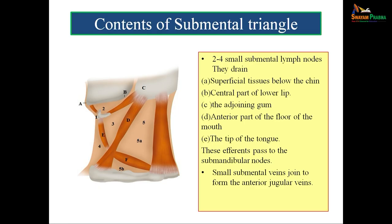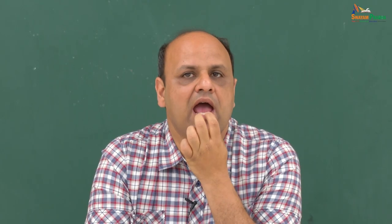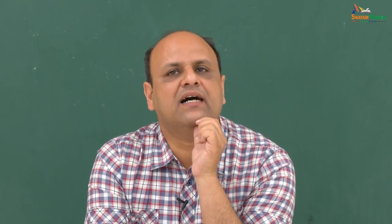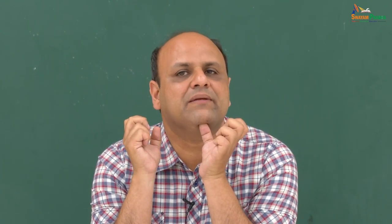The contents of the submental triangle include two to four small submental lymph nodes that drain the superficial tissues below the chin, central part of the lower lip, adjoining gum, anterior part of the floor of the mouth, and the tip of the tongue. Submental lymph nodes are palpated just below the mentum. Any swelling here indicates something wrong with the drainage area, with efferents passing to the submandibular lymph nodes.